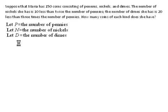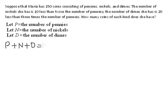The problem says that Maria has 150 coins consisting of pennies, nickels, and dimes. That means if we add them together, they should equal 150 coins. So our equation is P plus N plus D equals 150 — the number of pennies plus the number of nickels plus the number of dimes equals 150.